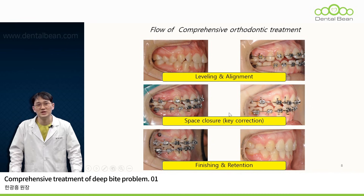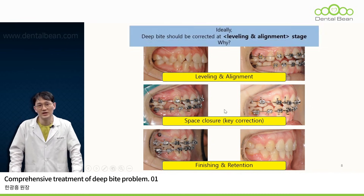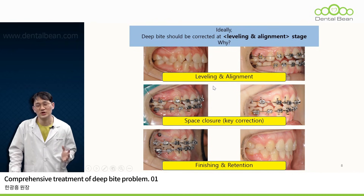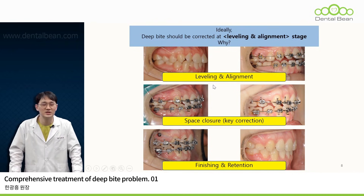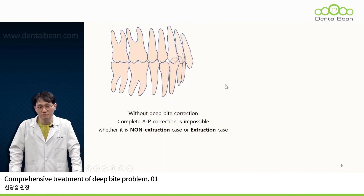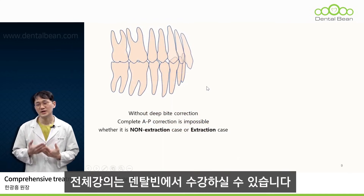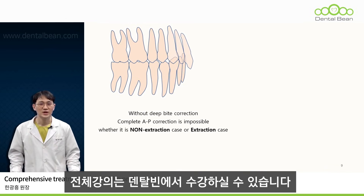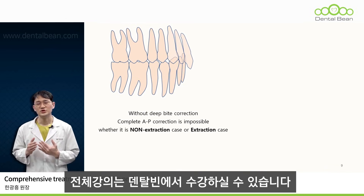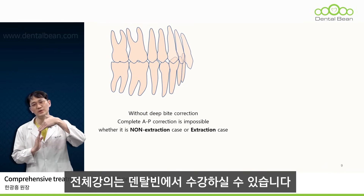Among these stages, when should we address the deep bite? Ideally, deep bite correction should occur precisely in the initial phase — the leveling and alignment stage. Deep bite is overwhelmingly common in class 2 malocclusion, and because it's class 2, there's a very high need to move the maxillary incisors backward.